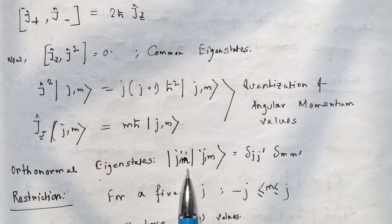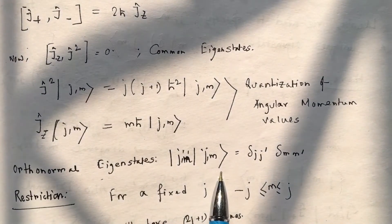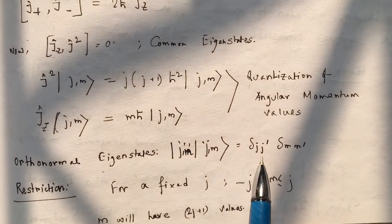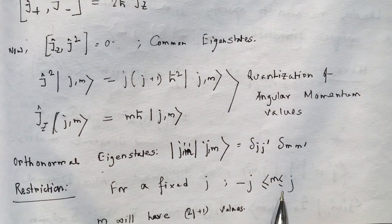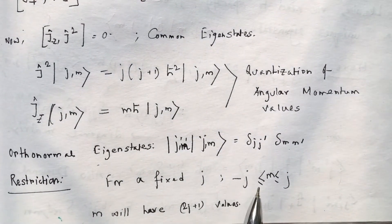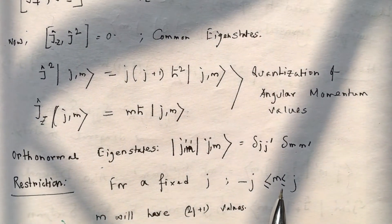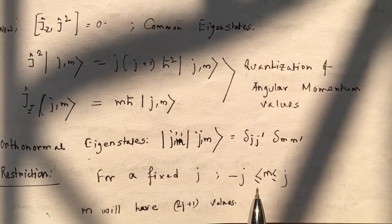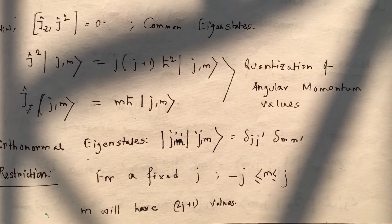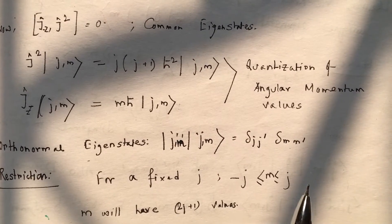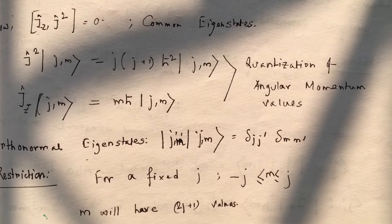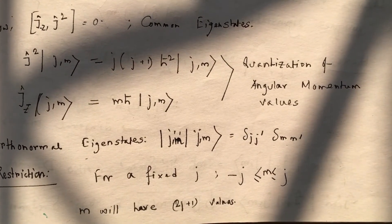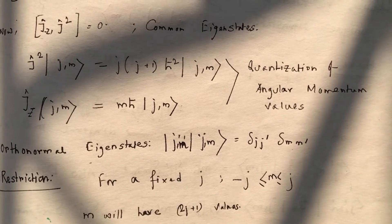We have also learned that these eigenstates are orthonormal — that means they are orthogonal and normalized — and to incorporate this property we used the Kronecker delta. We have also found the restriction on M values: M must be between +J and −J, and between two consecutive values of M there will be a difference of 1. For a particular J value, M will have 2J+1 values, giving 2J+1 states.